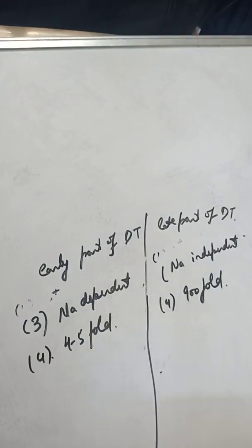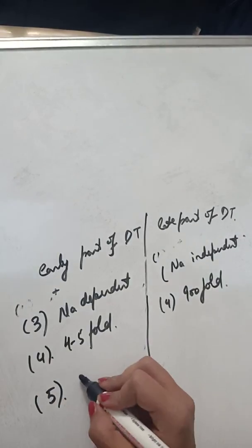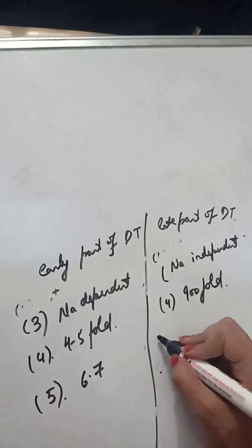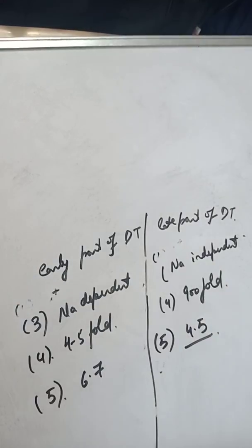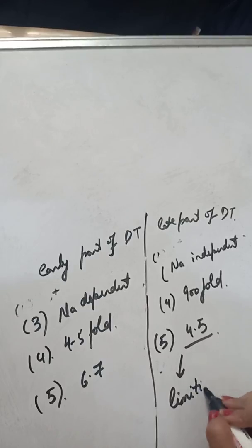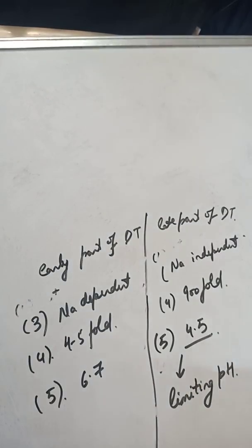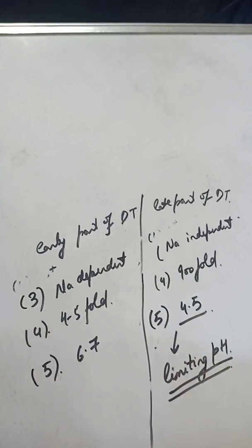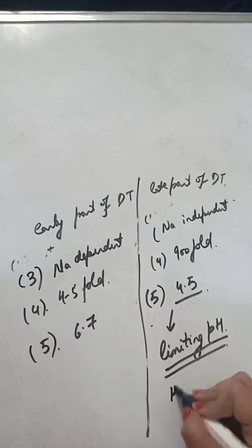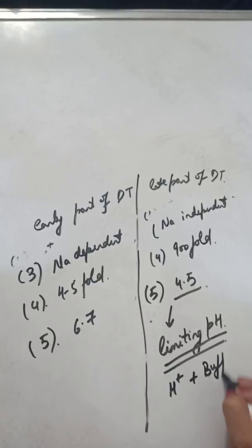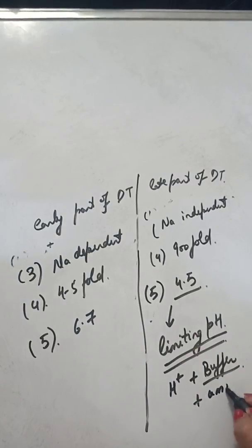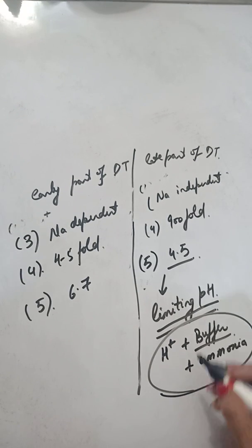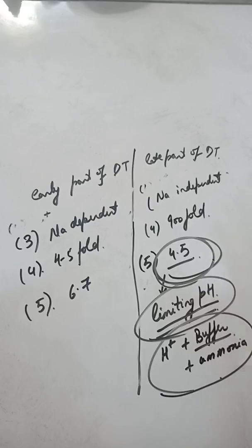In the early part, secretion decreases the pH of the lumen to only 6.7. In the late part, it can decrease the pH of the lumen to 4.5 — this is called the limiting pH, meaning it is the pH at which no more hydrogen ion can be secreted into the lumen. However, since hydrogen immediately combines with a buffer such as bicarbonate or the ammonia buffer in the late part of the distal tubule, free hydrogens are not left in the lumen. As a result, the limiting pH of 4.5 is not reached immediately, and more and more hydrogen can be secreted.